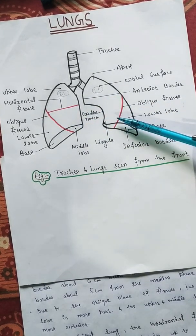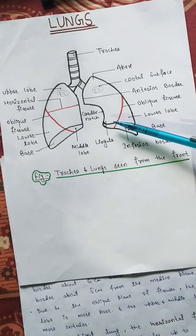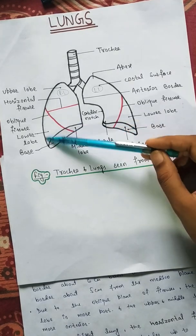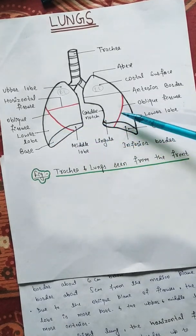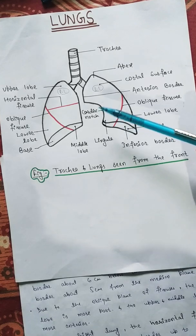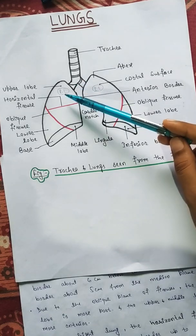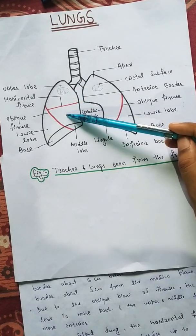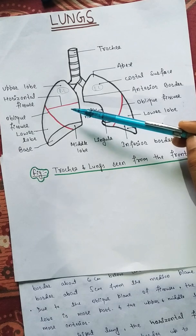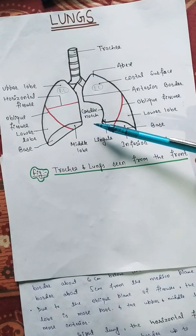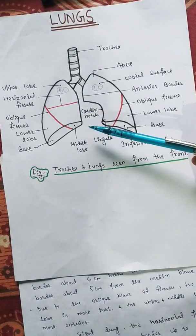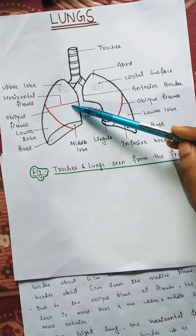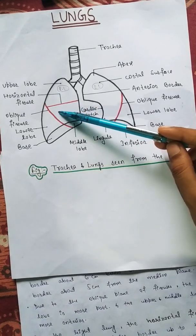Due to the oblique plane of the fissure, the lower lobe is more posterior, and in the right lung the upper and middle lobes are more anterior.